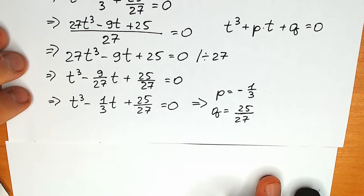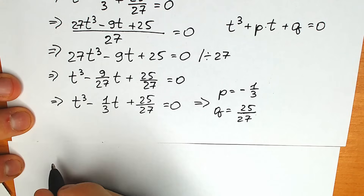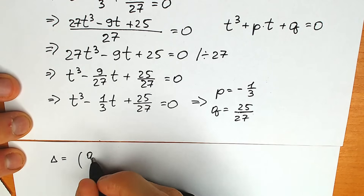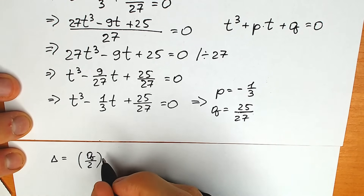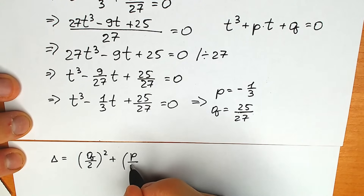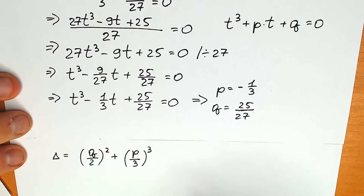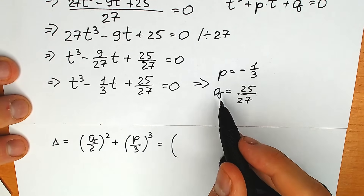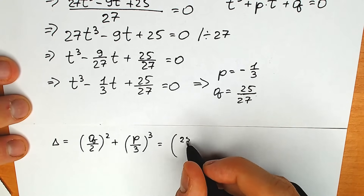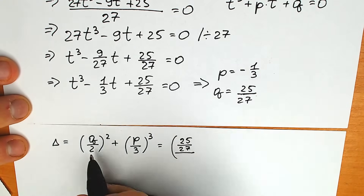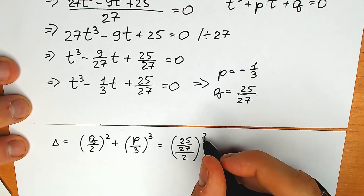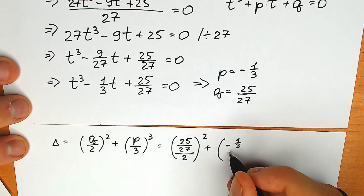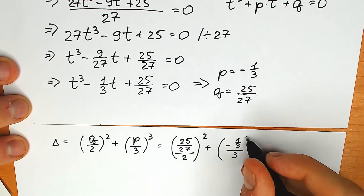First we need to start with the discriminant. Our discriminant is equal to (q over 2) squared plus (p over 3) cubed. Plugging in: q over 2 is 25 over 54, raised to the second power; p over 3 is minus 1 third divided by 3, which is minus 1 over 9, raised to the third power.